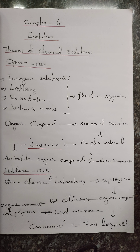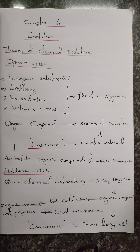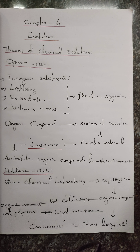To summarize, we discussed five theories of evolution: the first is Special Creation, the second is Spontaneous Generation, the third is Big Bang Theory, the fourth is Biogenesis Theory, and the fifth is Chemical Evolution. Please go ahead with these topics, complete your homework, and stay safe. We will meet in the next class with the next topic. Thank you.